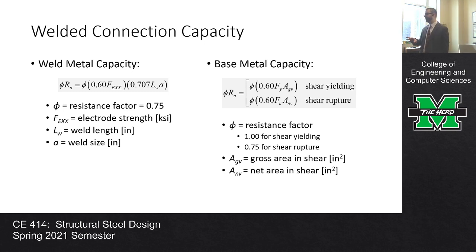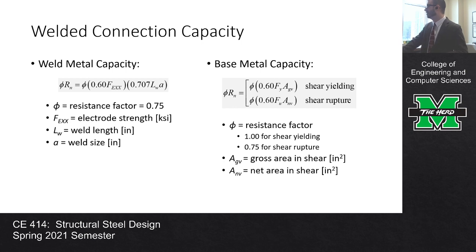Welded connections. So we're talking about fillet welds here. We have the weld metal capacity and the base metal capacity. Weld metal, very plug and chug. All you need is your electrode strength, your weld length, and your weld width or your weld size. Base metal capacity is the minimum. Well, all of this is the minimum, but either base metal shear yielding, base metal shear fracture, or the weld metal. But for base metal, we have two limit states, shear yielding and shear fracture. The fee value changes for these limit states. We either have 1 or 0.75. We have to compute a gross area in shear and a net area in shear. But for fillet welds, we get a little bit of a perk because those two values equal one another because we're not removing from the plate material to fabricate the connection.